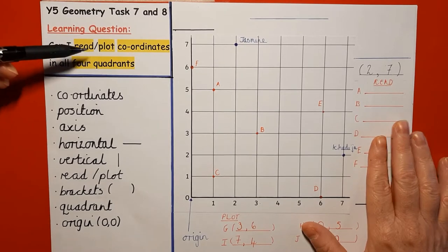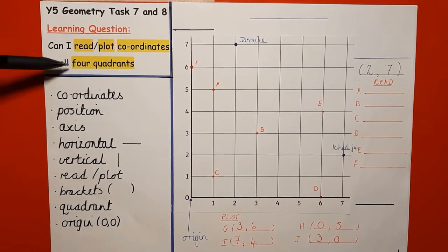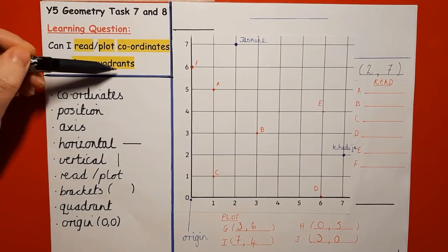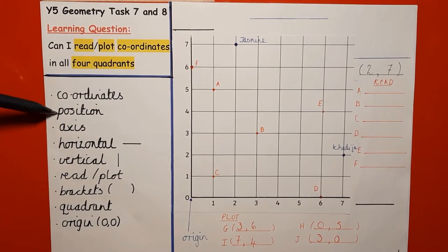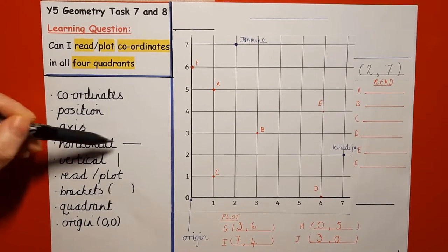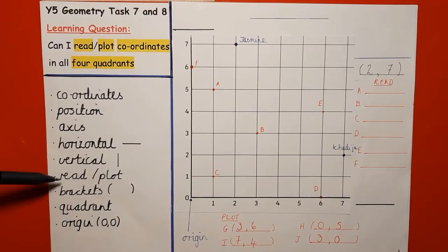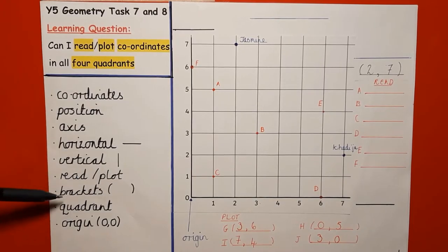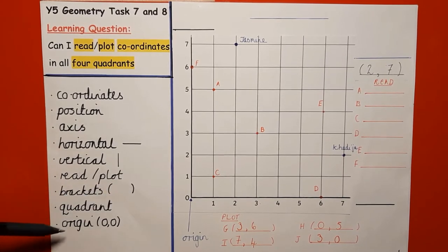Can I read and plot coordinates in all four quadrants? We've got some vocabulary here: coordinates, position, axis, horizontal, vertical, read, plot, brackets, quadrant, and origin.